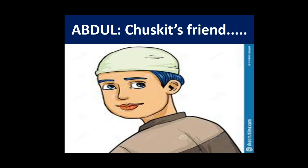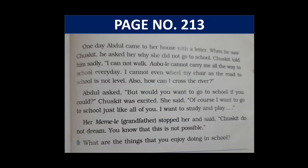This is a picture of Abdul, who is Chuskit's friend. Abdul was a very good boy. He helped Chuskit to go to school. But how? Let's see on page number 213. First of all, we will have the reading of this page.